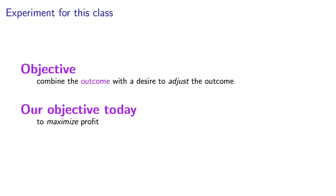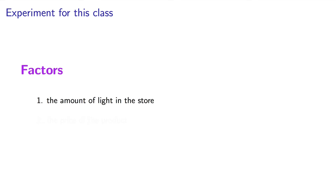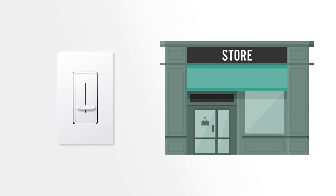Now this experiment has two factors. The first factor is the amount of light in our store. We can use a dimmer knob to control how much light is in the store. We can put that knob at 50% or 75% for example. A low amount of light or a high amount of light.